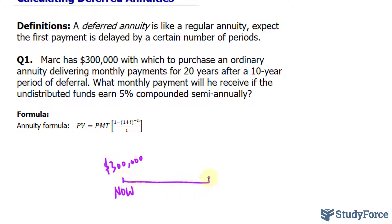And for 10 years, that money will grow based on a 5% compounded semi-annually interest. Now, this is the time where he starts to receive his first payment.